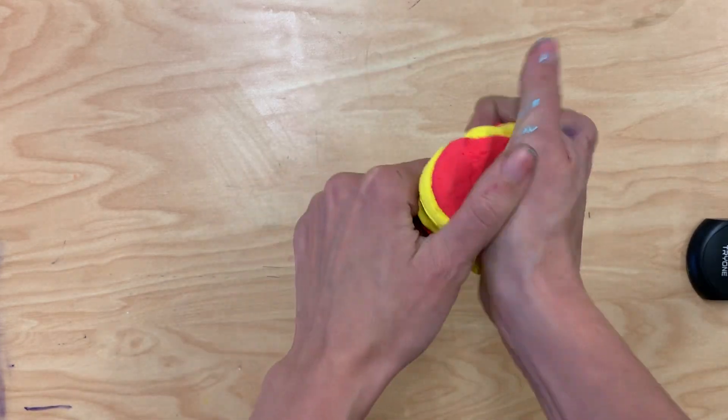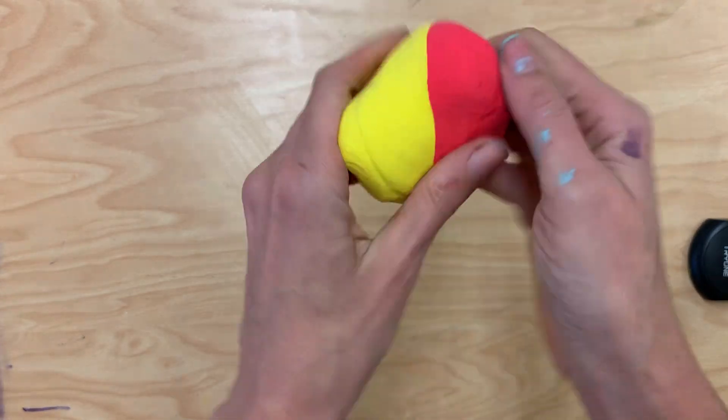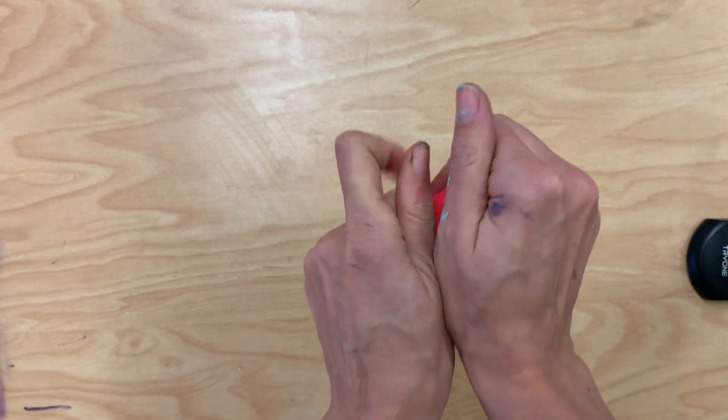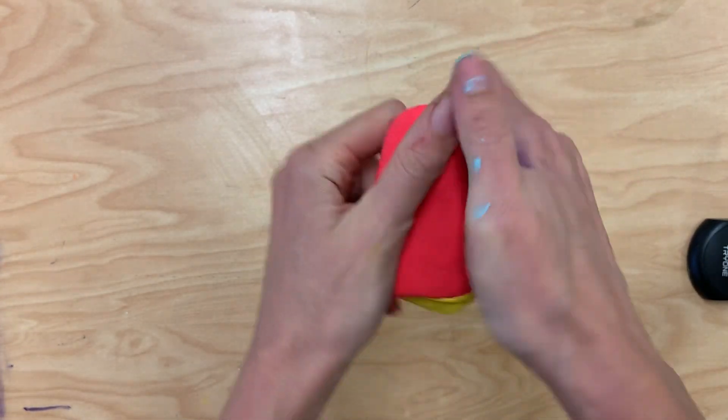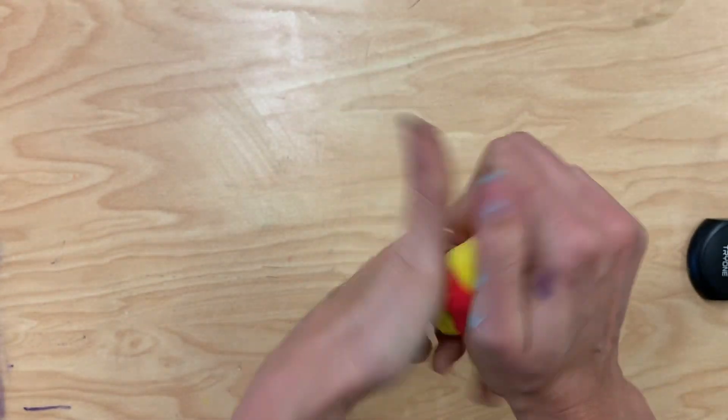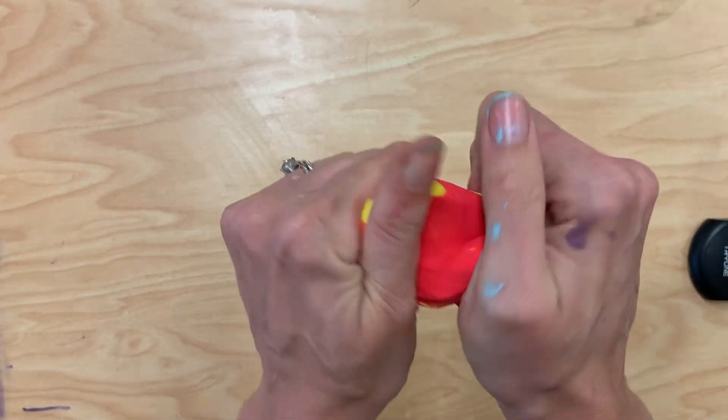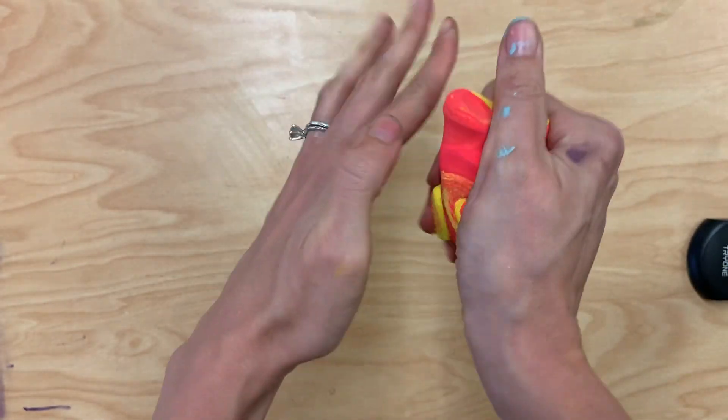We can twist it up and mix it as much as we can, and what we'll see is that the more we mix it, the more the colors change. So I'm going to mix it here for a little bit and then we can start to see our new colors develop.